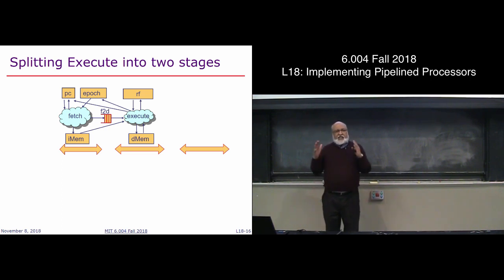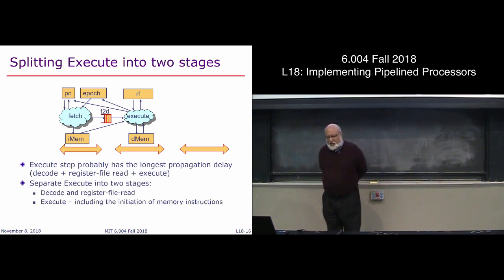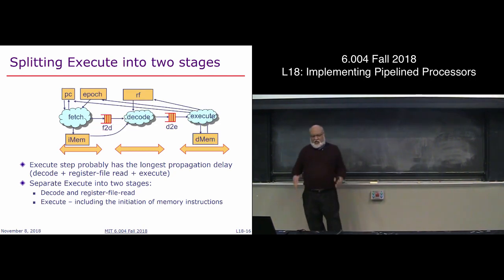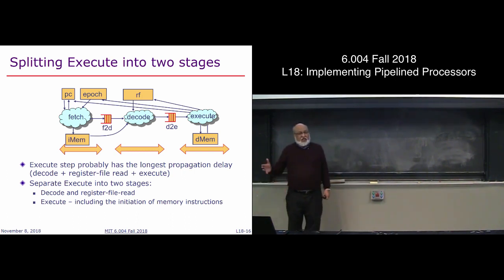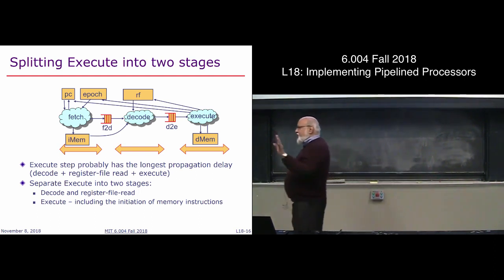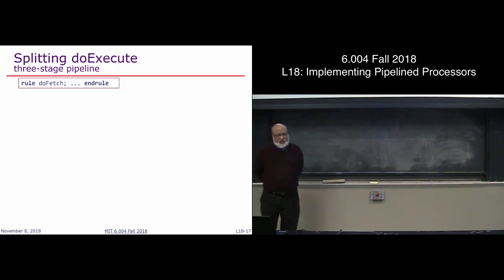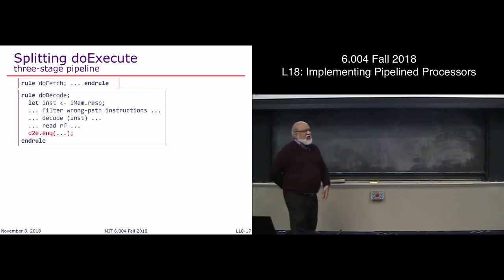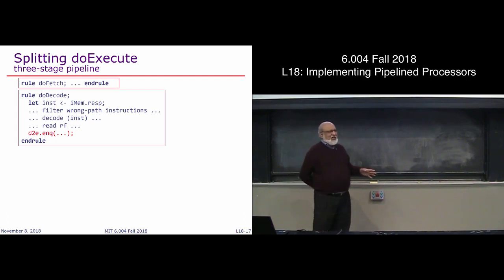The next stage: execute is too fat, so break it into two parts — a decode part that decodes the instruction and does register fetch, putting results into a D2E FIFO, and then an execute part that reads from D2E FIFO and executes. In this three-stage pipeline, three instructions could be going simultaneously: one in fetch, one in decode, one in execute. The same epoch solution works whether it's two stages or fifteen stages in your pipeline.